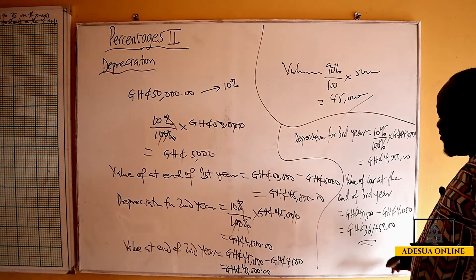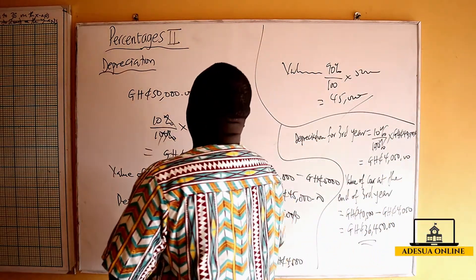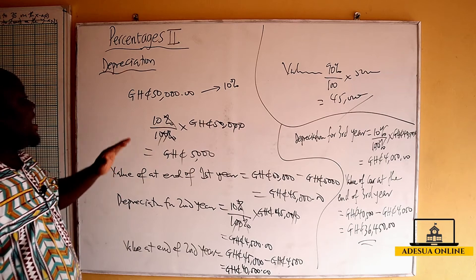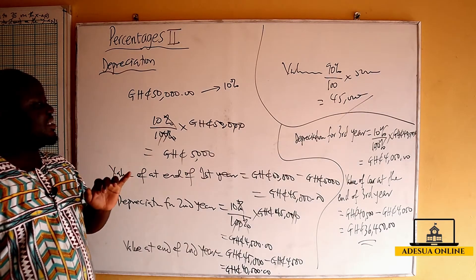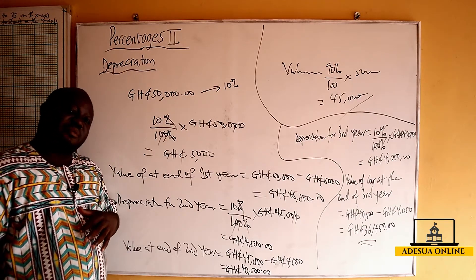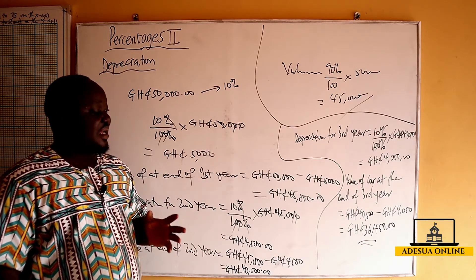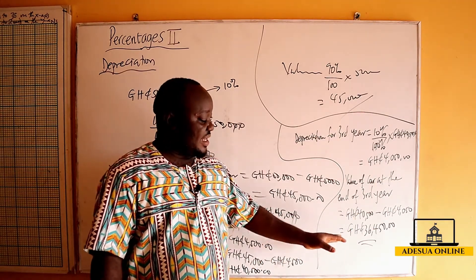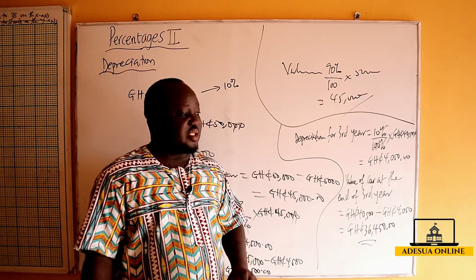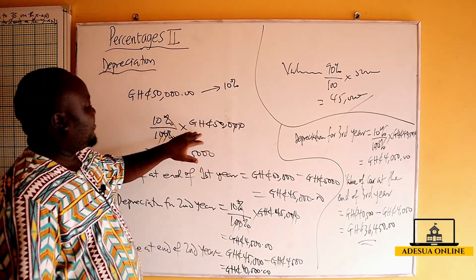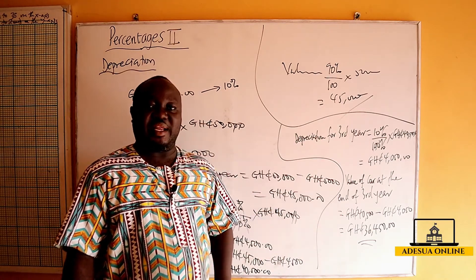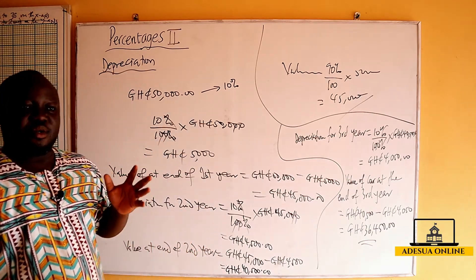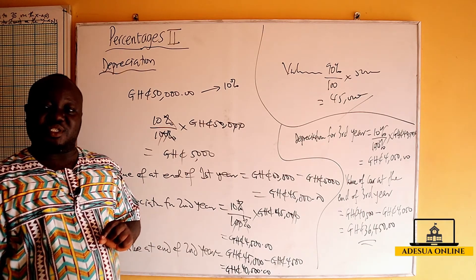So if we started with a purchase price of 50,000 — whether it's a car, a fridge, a freezer, or a generator — and we are told the value depreciates by 10 percent each year, then at the end of the third year the value is 36,450. The value has dropped from 50,000 to 36,450 after three years of buying it. We'll now start some examples on compound interest and depreciation, and then move on to our next topic: income tax.